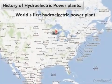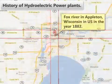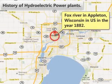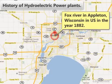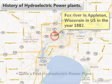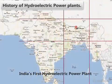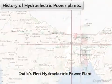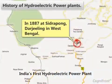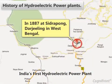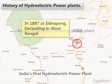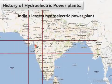History of Hydroelectric Power Plants. The world's first hydroelectric power plant was built across the Fox River in Appleton, Wisconsin, in the US in the year 1882. India's first hydroelectric power plant was commissioned in 1887 at Sidra Pong, Darjeeling, in West Bengal.